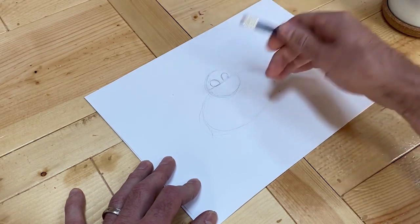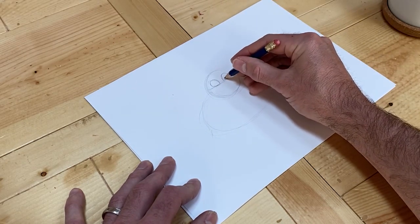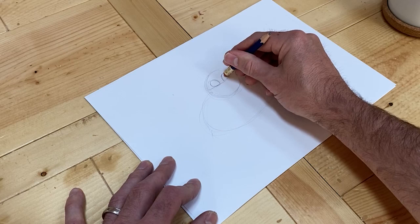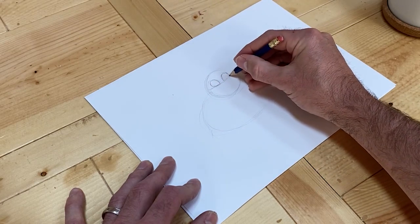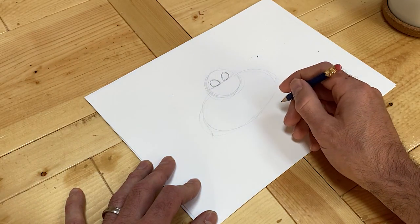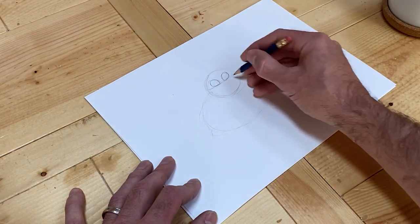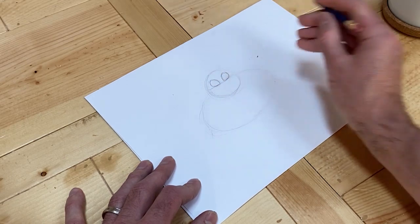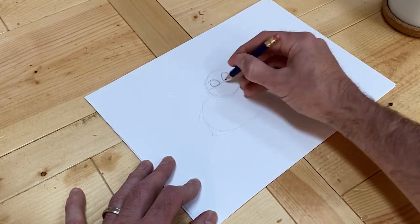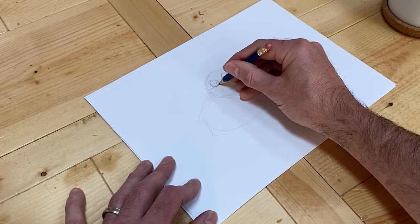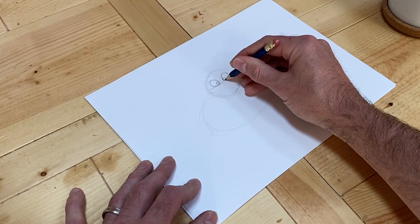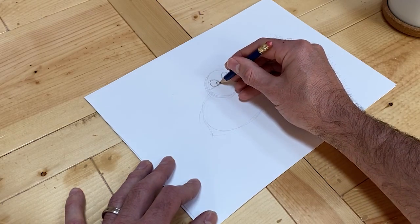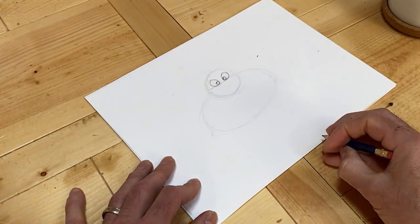No need to worry too much about getting it perfect. We're just trying to get some of the basic shapes in there. We can always come back later and draw a little darker on the shapes that we want to refine. We've got our guitar picks, and then you'd be surprised when you put just little circles in there. It's like, I'm starting to see a little character come out.